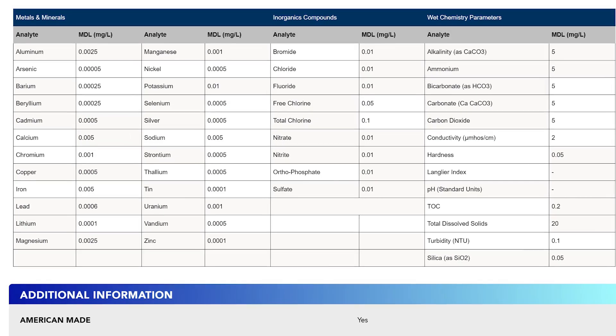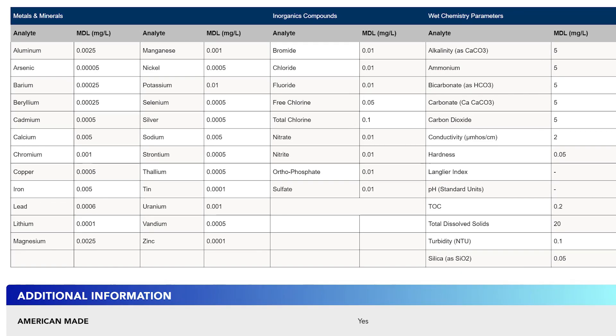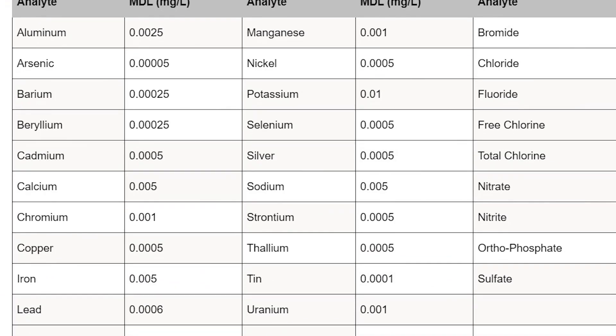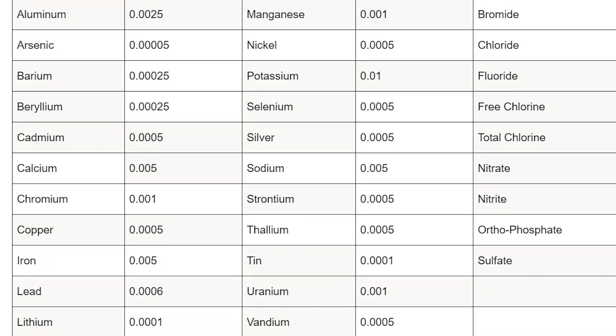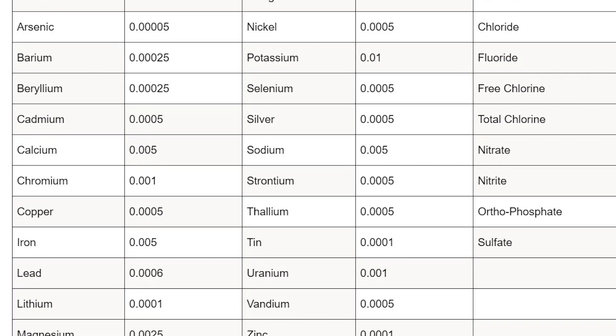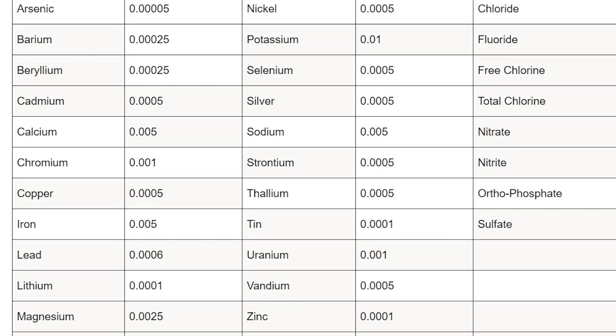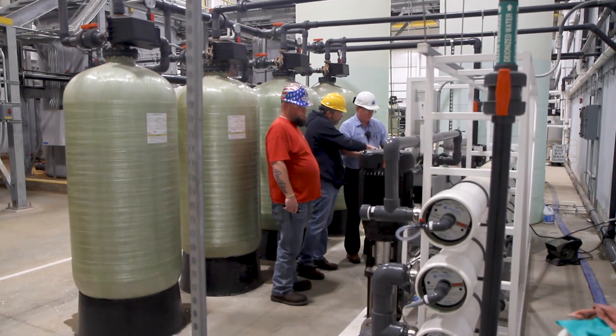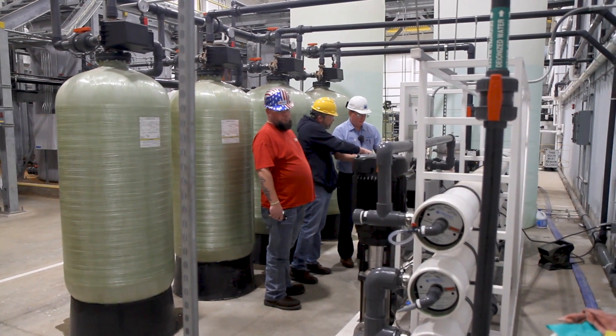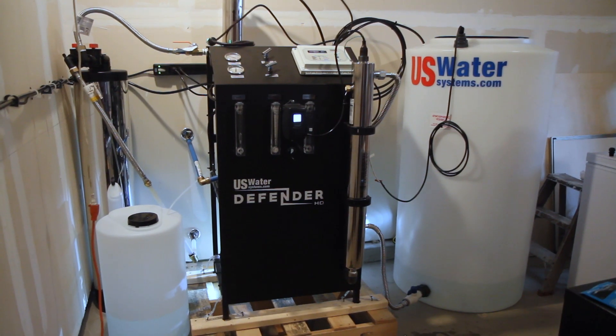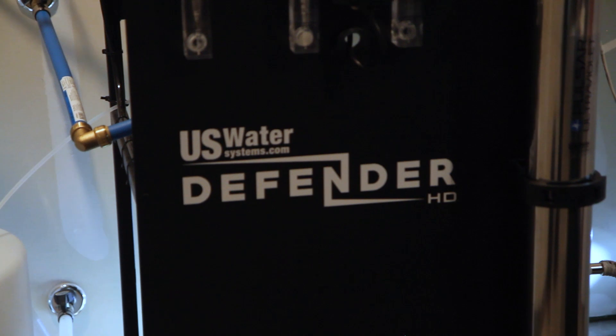This test gives you an in-depth analysis of 24 metals, 9 inorganics, as well as 14 other parameters. This water test was developed with the commercial and whole house reverse osmosis in mind.